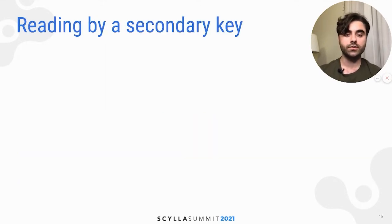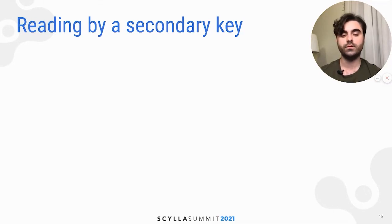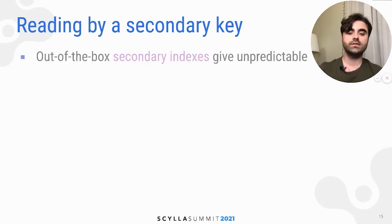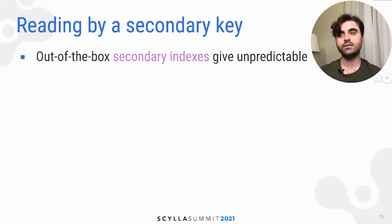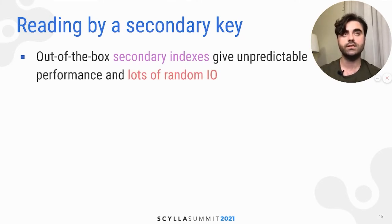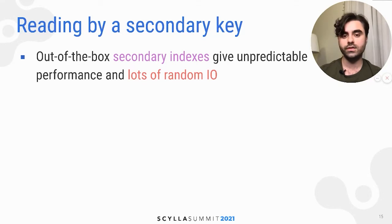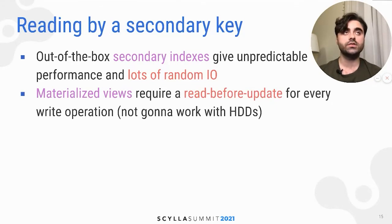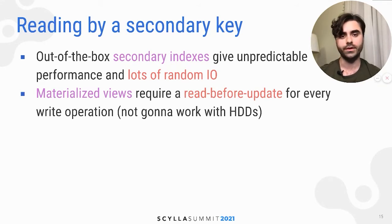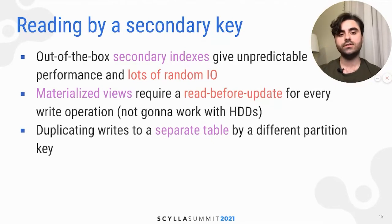All data is stored by user, but let's say our security team wants to check whether there have been multiple authorizations to multiple users from a single IP address. In that case we need to provide the ability to read by a secondary key. Scylla has an out-of-the-box feature called secondary indexes, but this gives unpredictable performance because every read may involve an unbounded number of network requests to other nodes and lots of random I/O, which is bad for HDDs. Another approach uses materialized views, but those require a read before every update, and with our write rate it would just kill our HDDs.